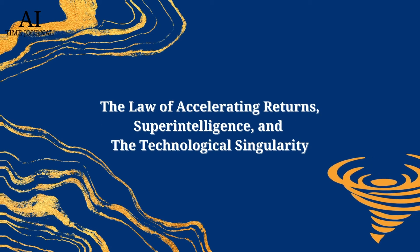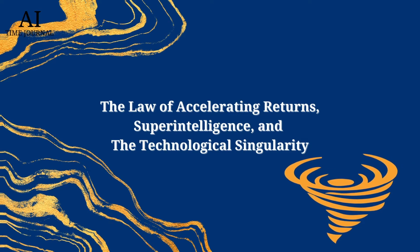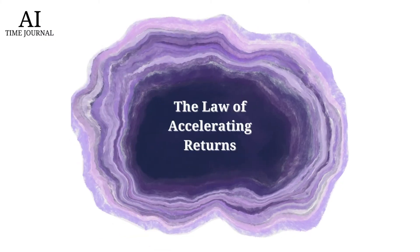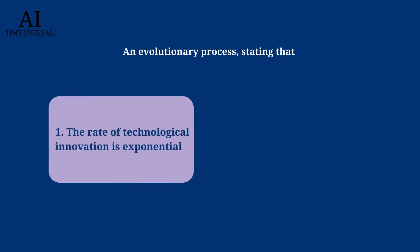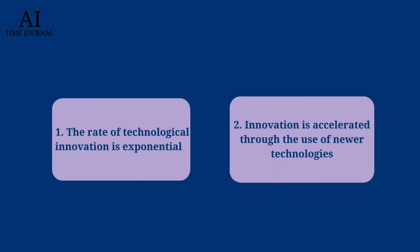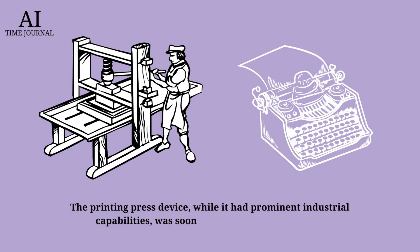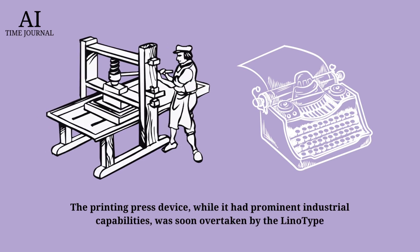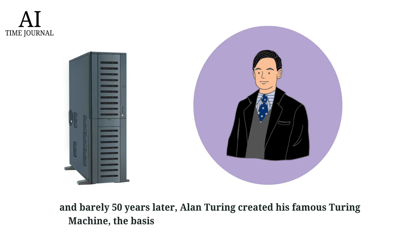The Law of Accelerating Returns, Superintelligence, and a Technological Singularity. The Law of Accelerating Returns is an evolutionary process stating that the rate of technological innovation is exponential, and innovation is accelerated through the use of newer technologies. The printing press, while it had prominent industrial capabilities, was soon overtaken by the Linotype, and barely 50 years later, Alan Turing created his famous Turing machine — the basis for all modern computational technology.